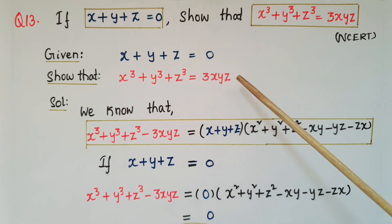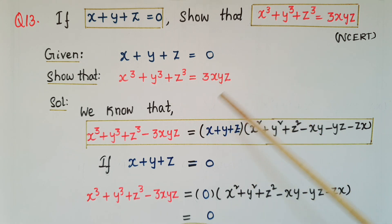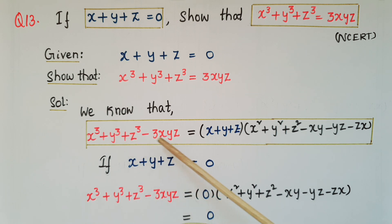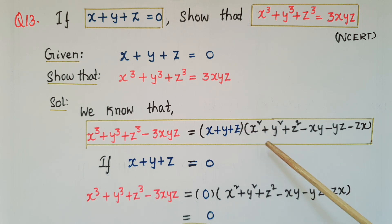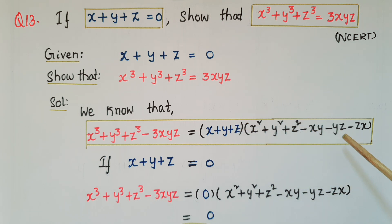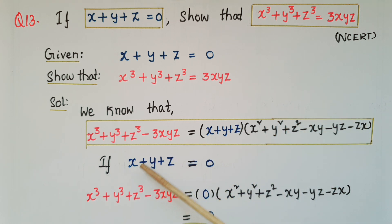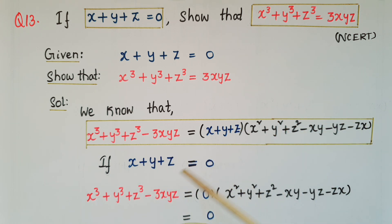We know the identity: x cube plus y cube plus z cube minus 3xyz is equal to x plus y plus z, multiplied by x square plus y square plus z square minus xy minus yz minus zx. Here, x plus y plus z is given to be equal to 0.